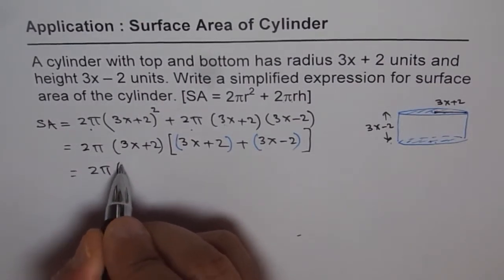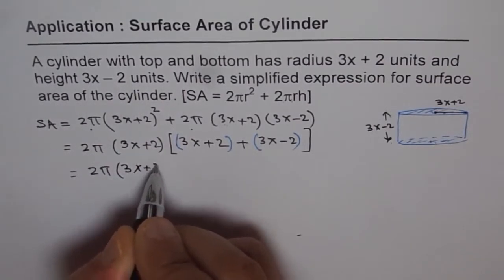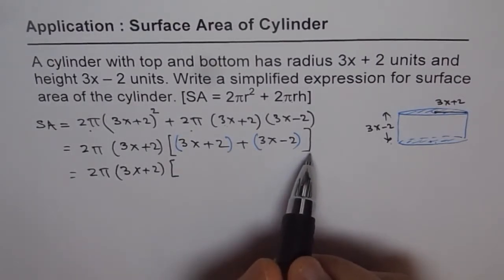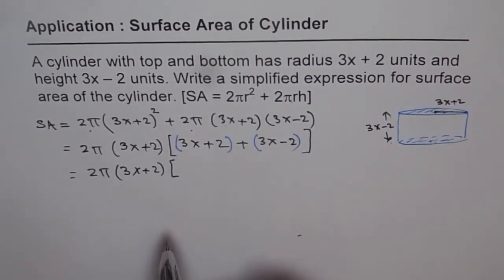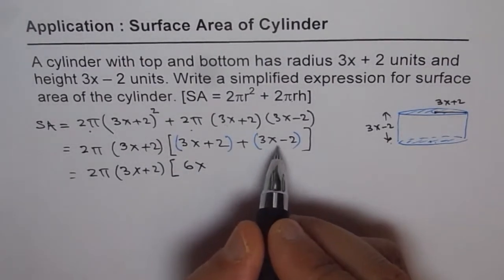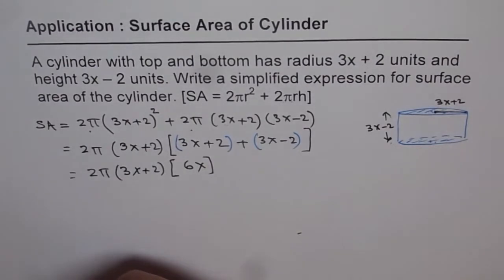Now we can simplify these terms. So we get 2 pi, 3x plus 2 and within brackets, I have used square brackets just to show you that there are different kinds of brackets. Now 3x plus 3x is 6x and plus 2 minus 2 is 0. So we get just 6x here.